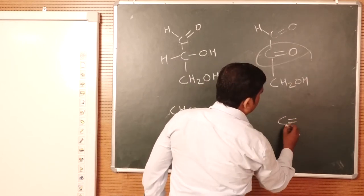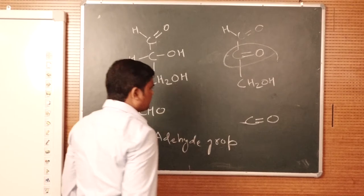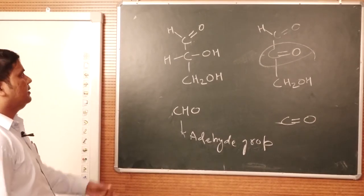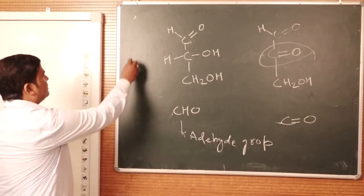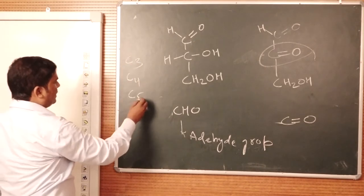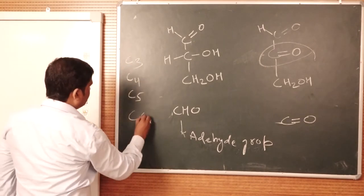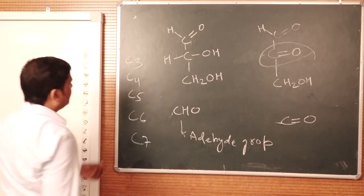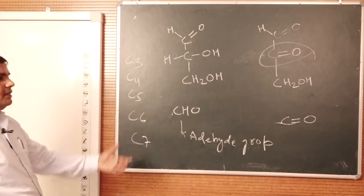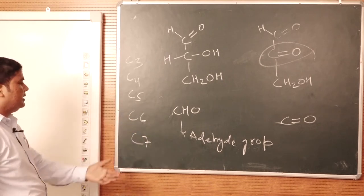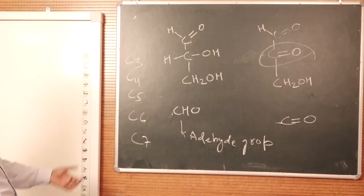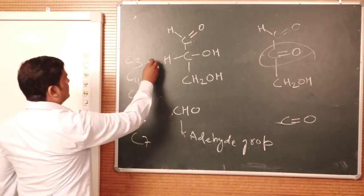Going to a higher level, when the carbon number is 3, 4, 5, 6, or 7, we can name carbohydrates accordingly. When a carbohydrate has only 3 carbons, it is called a triose.